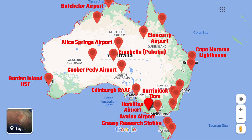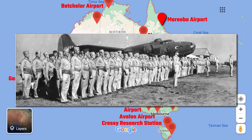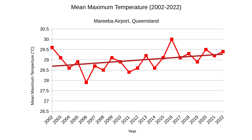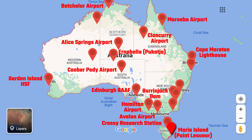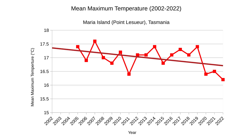Our map's getting rather crowded, but let's continue. Mareeba Airport, a former US Army Air Force base during World War II located in far north Queensland, has certainly experienced a rise in temperature of more than 1 degree over the last 20 years according to the official data. Our next location is Point Lesueur on Maria Island, approximately 4 kilometres off the east coast of Tasmania — a nice breezy location. The data shows significant declines in average temperature over the last few years, noting that no data was available prior to 2005.